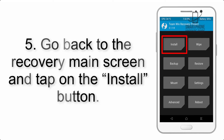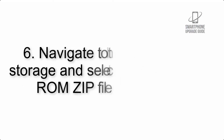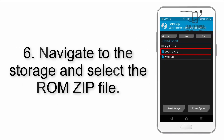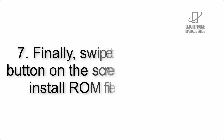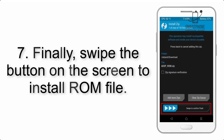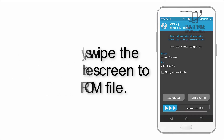Step 5: Go back to the recovery main screen and tap on the Install button. Step 6: Navigate to the storage and select the ROM zip file. Step 7: Finally, swipe the button on the screen to install the ROM file.